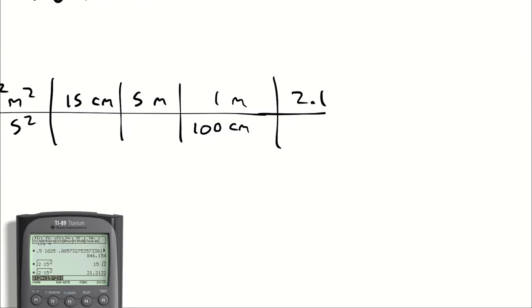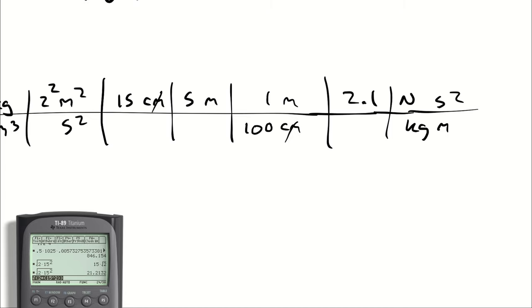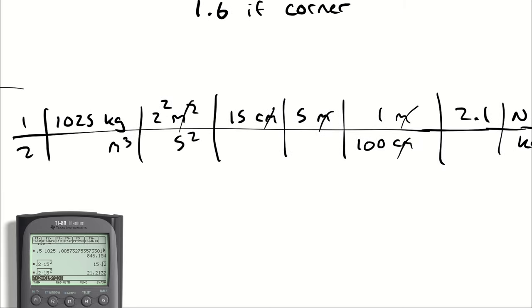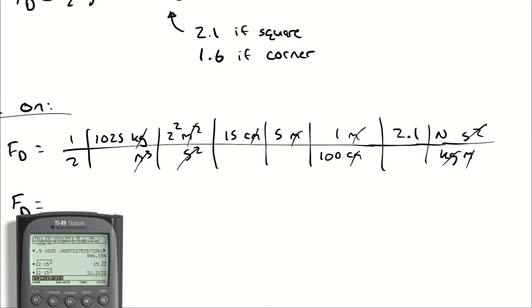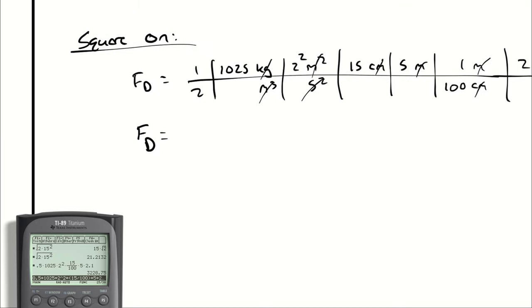So our drag force in newtons. A newton is a kilogram meter per second squared. Centimeters cancel centimeters. Square meters meters and meters cancels meters in cubic meters. Second squared cancels second squared. Kilograms cancels kilograms. So 0.5 times 1025 times 2 squared times 15 times 5 times 2.1, and we are dividing by 100. We get a drag force of 3,228.8 newtons.